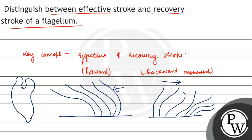Now whenever the Euglena brings the flagellum towards this side, it is more of a straight movement and it will move in a forward direction. And when it takes the movement towards this side, it goes into recovery.